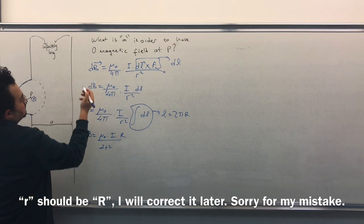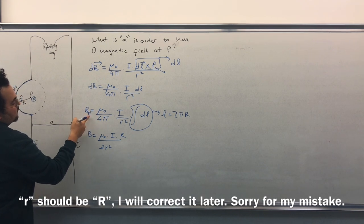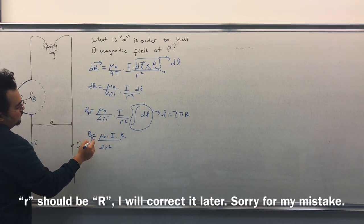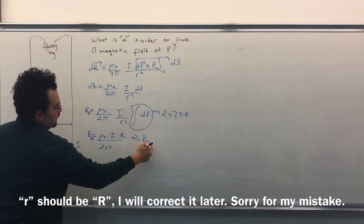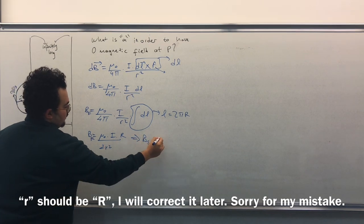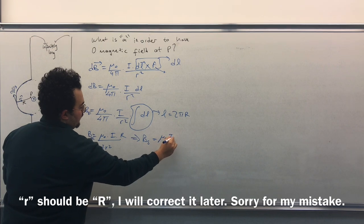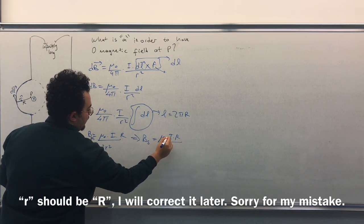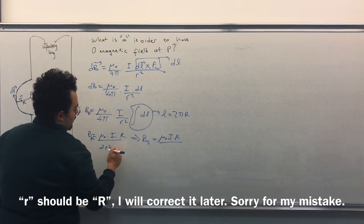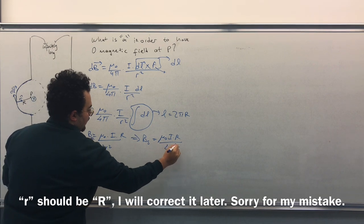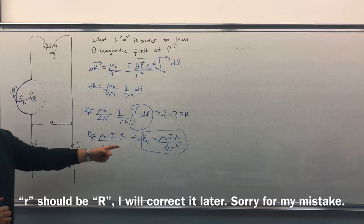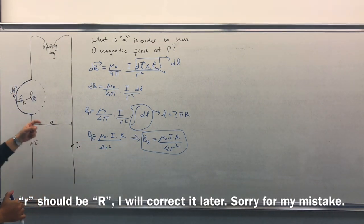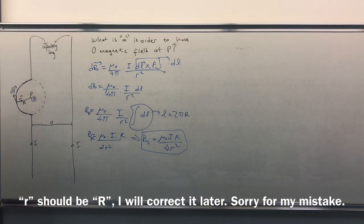So if we write full circle here and full circle here, we will have B semicircle equals to mu zero pi R divided by 4r square. So this is the magnetic field caused by the semicircle.